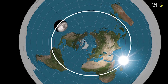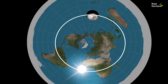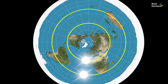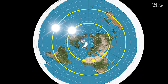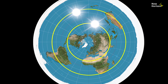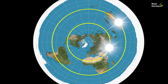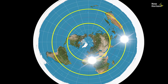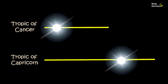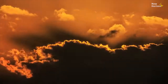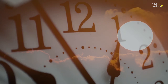Flat earthers argue that the Sun and moon move above the Earth in circular paths. If the Sun moves at a constant speed, it makes a huge difference in day and night duration, because the circumference of the Tropic of Capricorn is much greater than the Tropic of Cancer on the flat earth model. The Sun would need more time to go around in December than in June. In short, time — which we all depend on — can't be explained in a flat earth model.